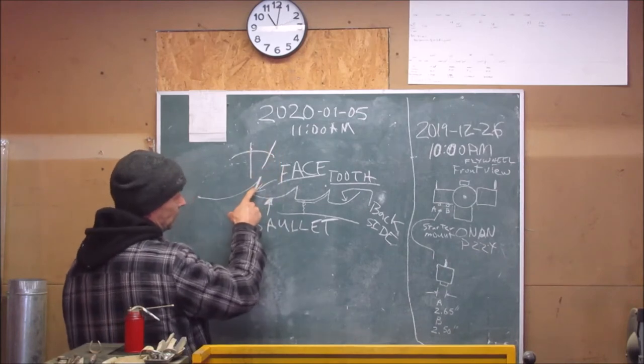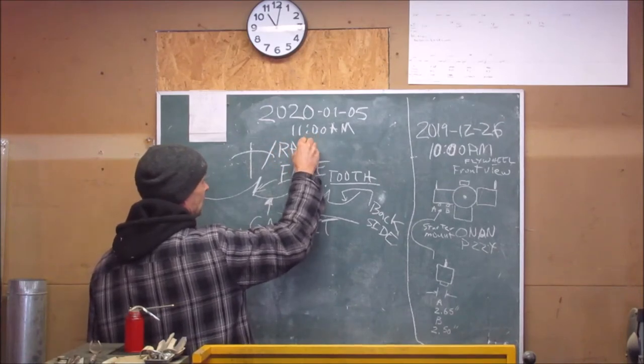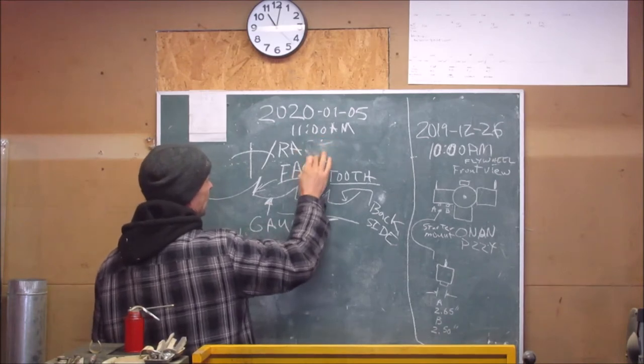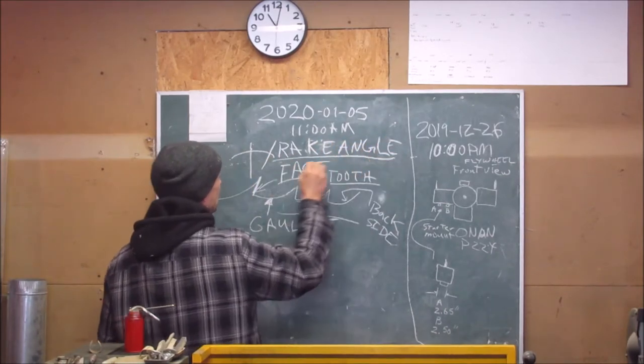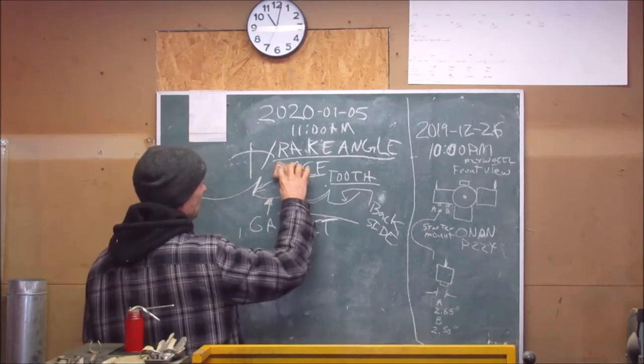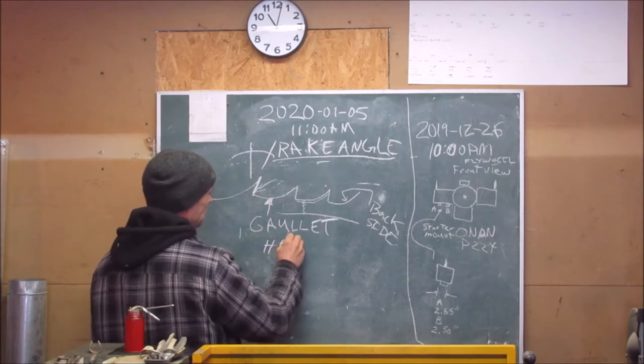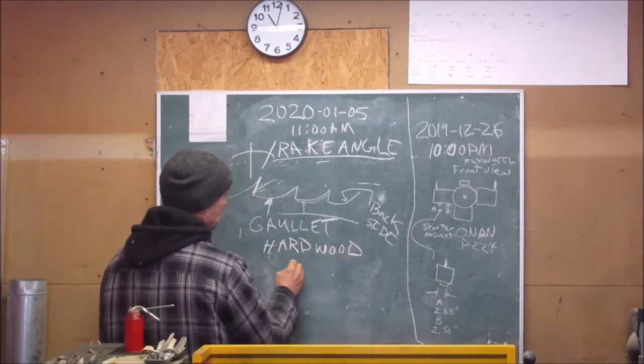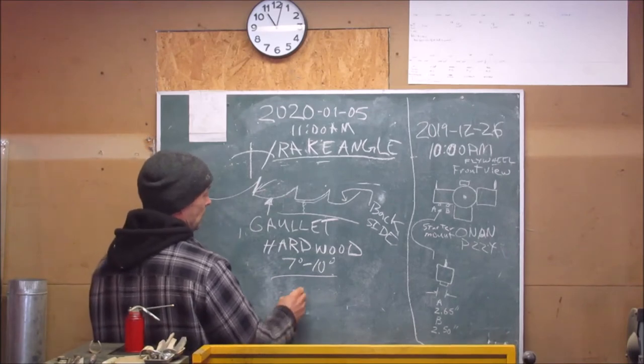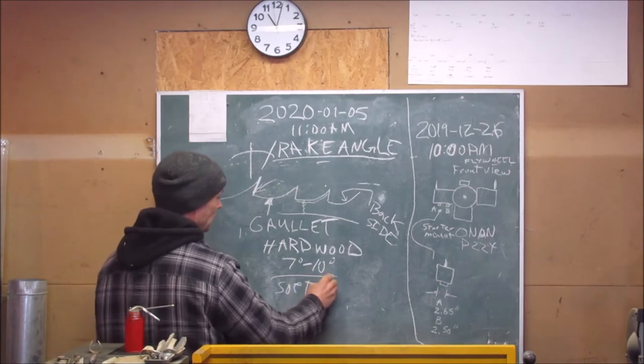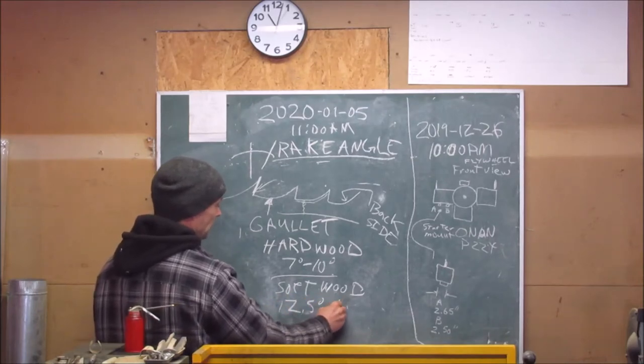Now there's an angle, there's an angle to that rake. It's called rake. The rake angle is seven to ten degrees for hardwood, and for softwood, twelve and a half to fifteen degrees.